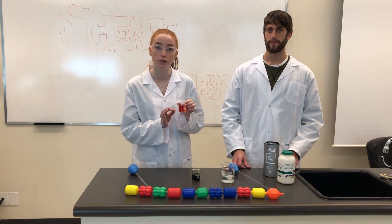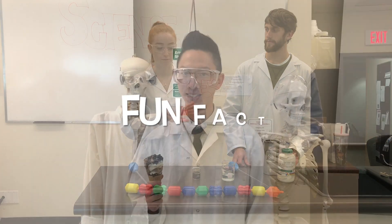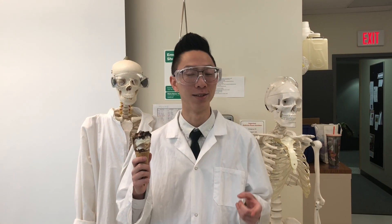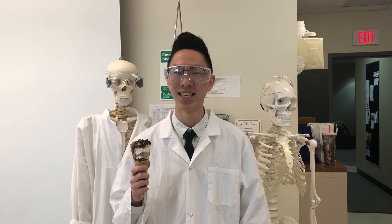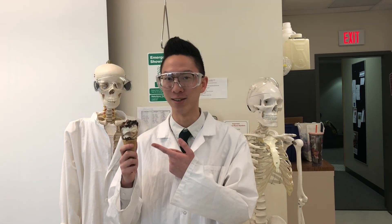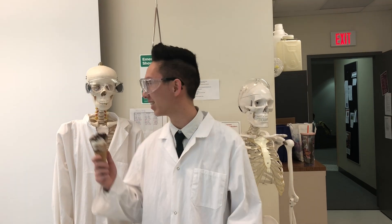For this experiment we did put food coloring in just so it's easier to visualize. Fun fact: alginate is used in food as a thickening, stabilizing, and forming gel. Some foods that contain alginate are ice cream, pudding, and onion rings.